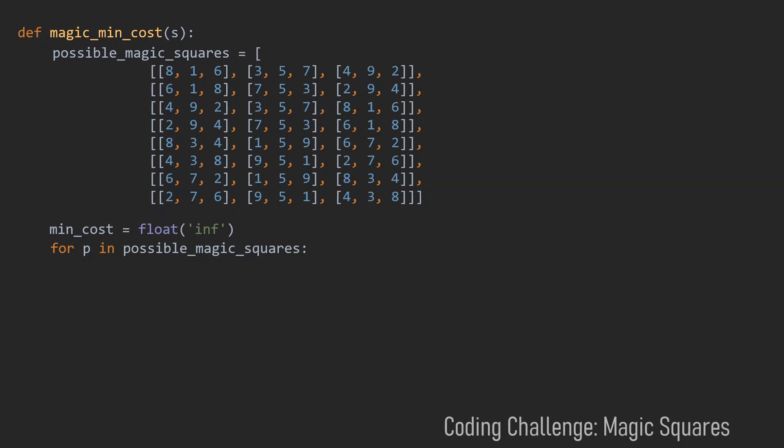Then we can easily iterate through all the possible magic squares and compare them element-wise with our s. We will need two loops for this: one that iterates over the rows and one that iterates through the columns. And then we can just add every difference of s and p to our current cost. And at last see if our current cost is less than our minimum cost, and in this case update our minimum cost. When we now return the minimum cost at the end, we are basically finished with this problem.